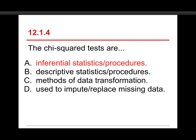Data transformation, no, that would be things like logarithmic and exponential or inverse transformations. And in terms of imputing data, imputing data means replacing missing data, and chi-squared has nothing to do with that. It's an important topic, but this test has nothing to do with it.